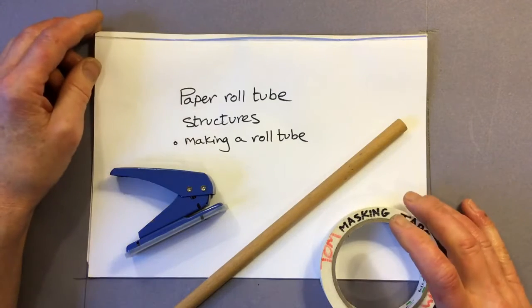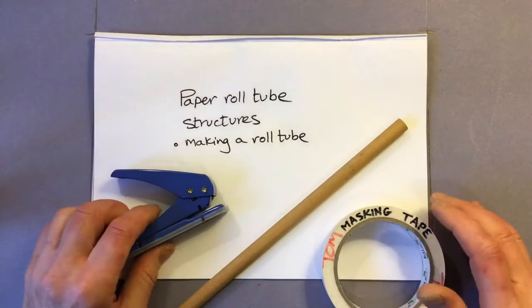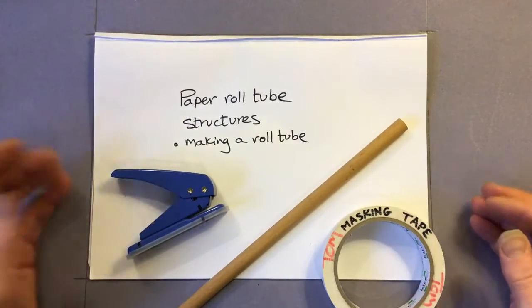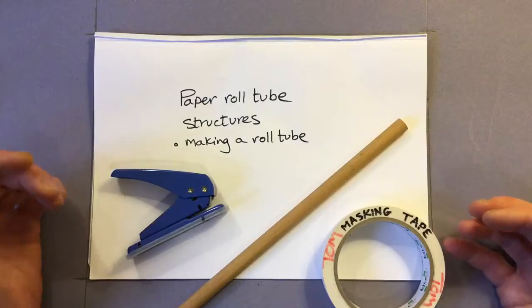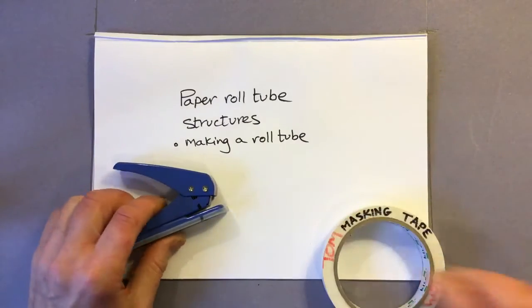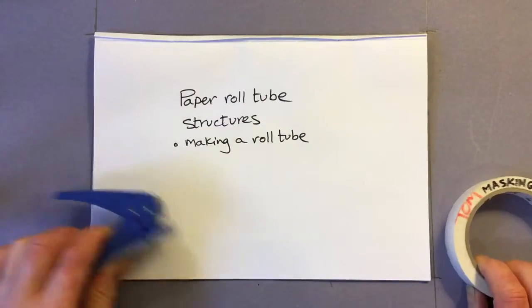Paper roll tubes are quite easy to make and you can make lots of structures but also mechanisms from them. So let's see what you're going to need for this.